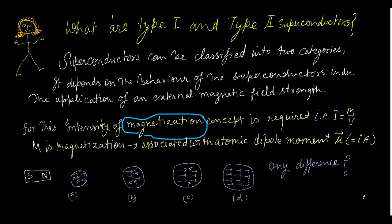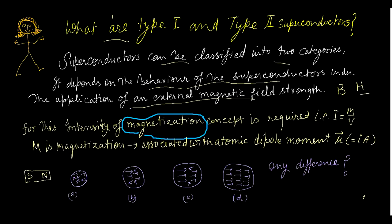Superconductors can be classified into two categories. This classification depends on the behavior of the superconductors under the application of an external magnetic field strength. Here, B is the magnetic flux density and H is the magnetic field intensity — that is the difference between these two physical quantities.